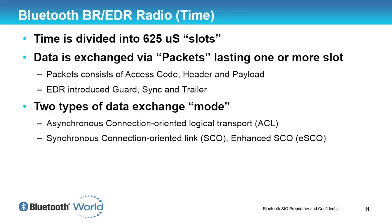We have some packets that are one slot long, some packets that are three slots long, and some packets that are five slots long. Packets consist of a very simple structure: they have an access code, a header, and then some payload.